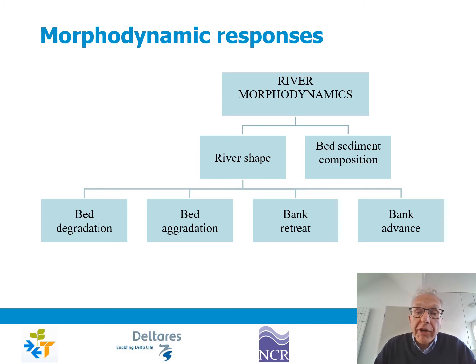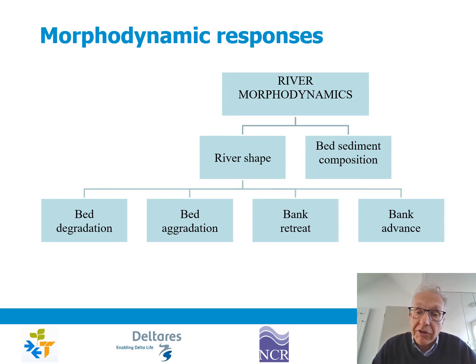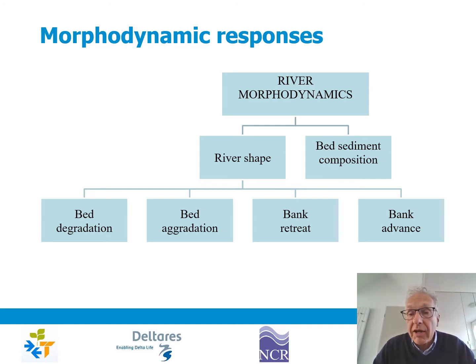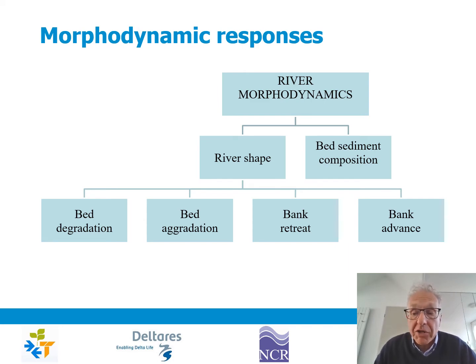Another aspect of shape is what you see from the air — the planform, the pattern of bank lines. Bank lines can retreat by erosion, or they can advance by accretion or growth or floodplain formation.